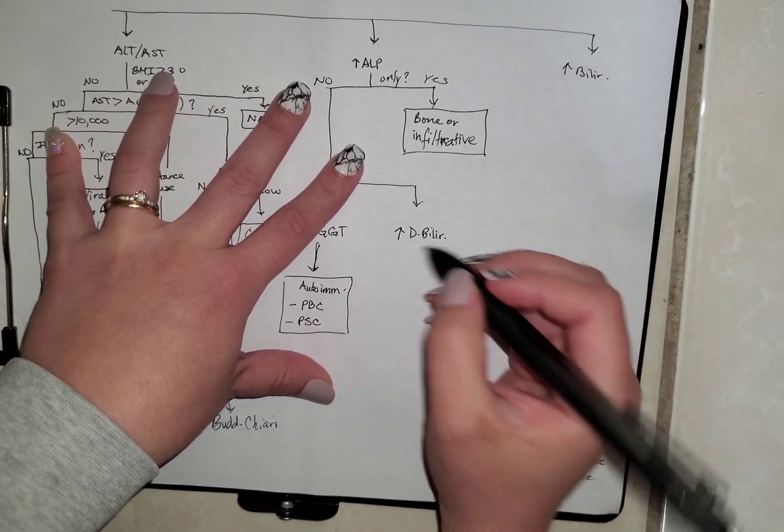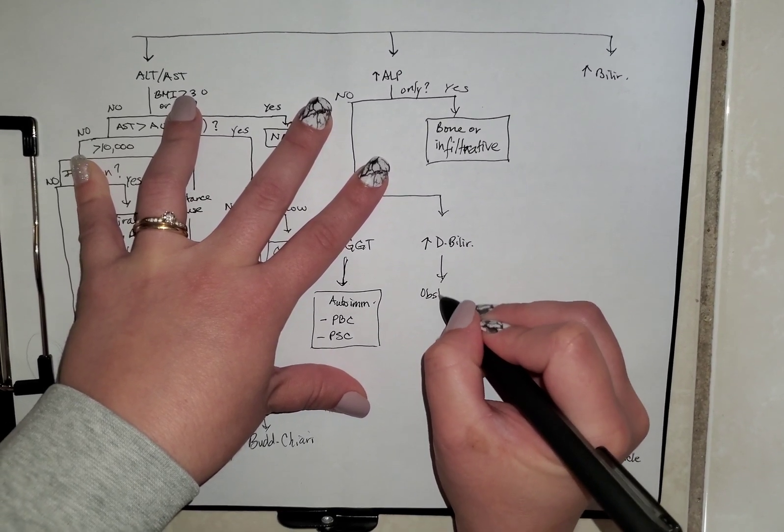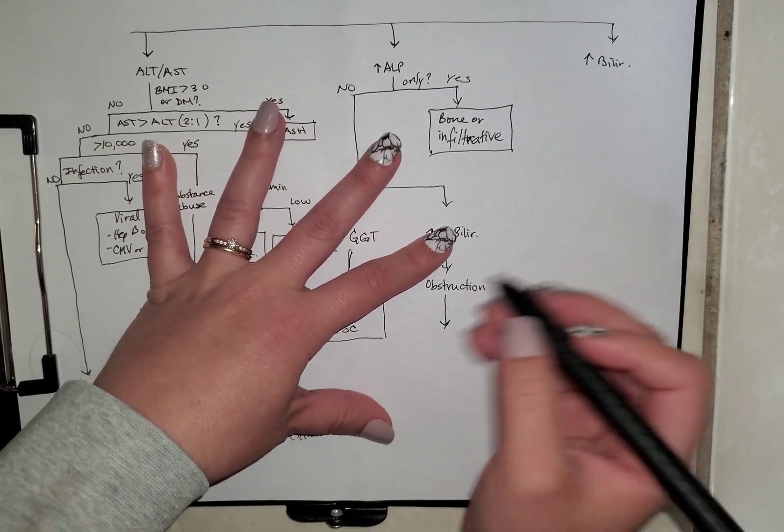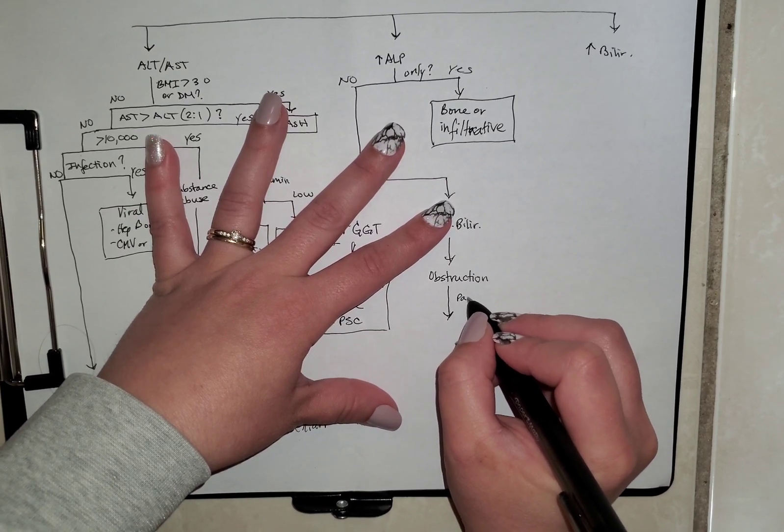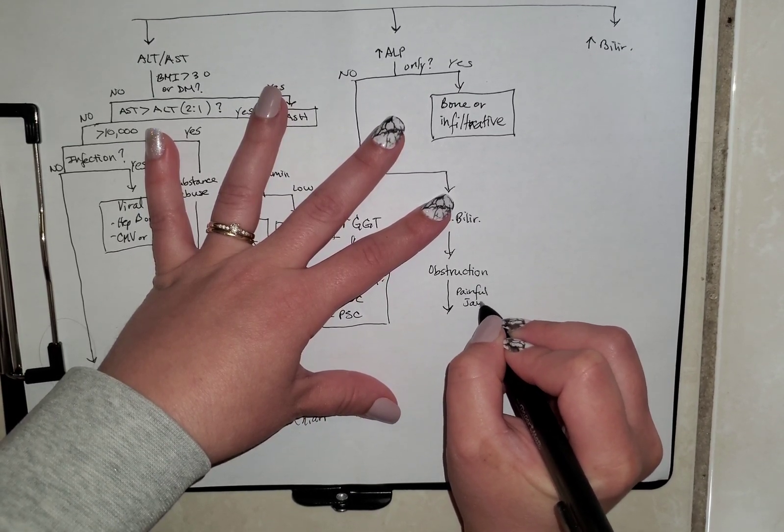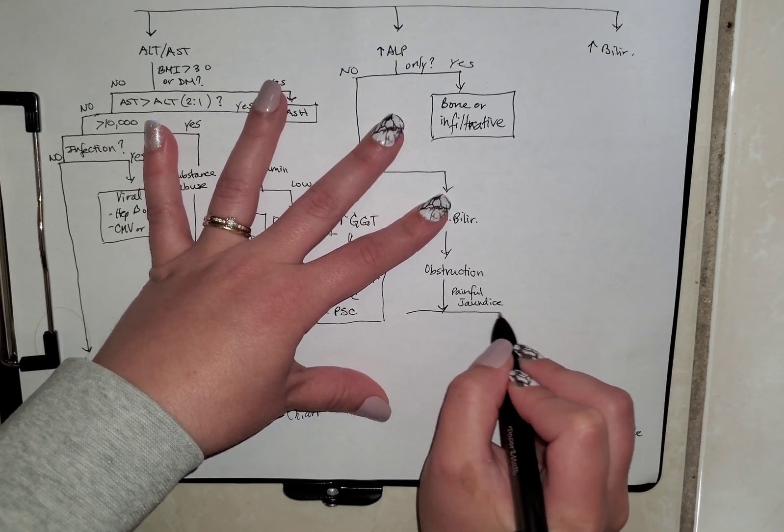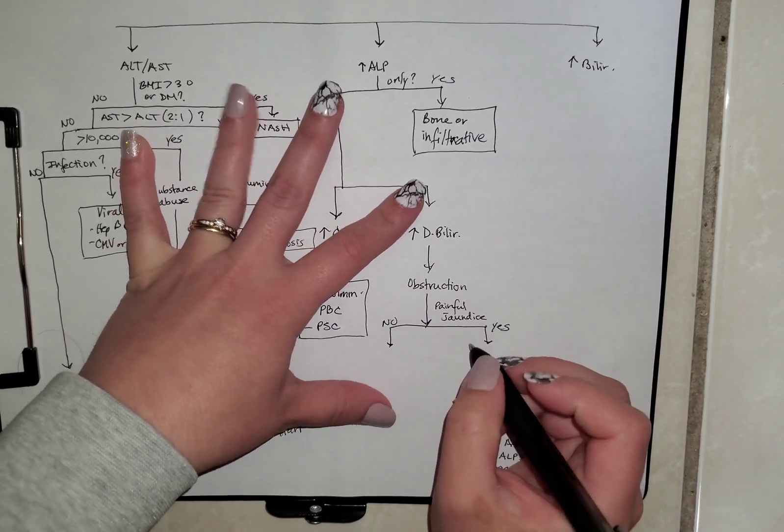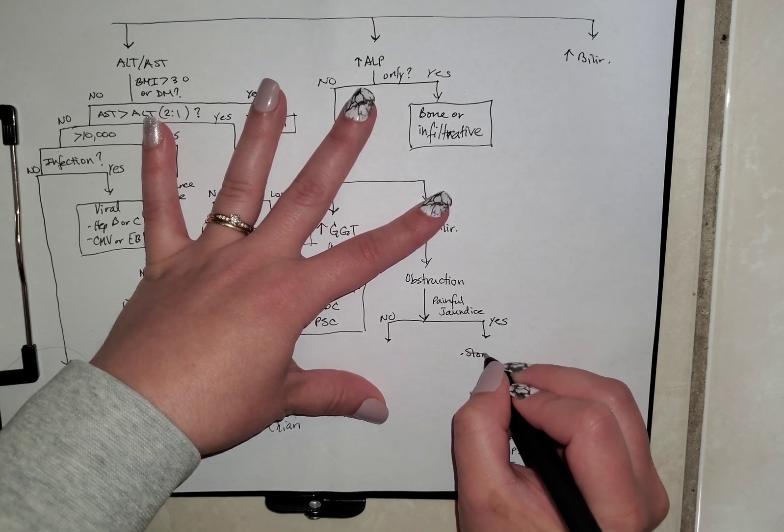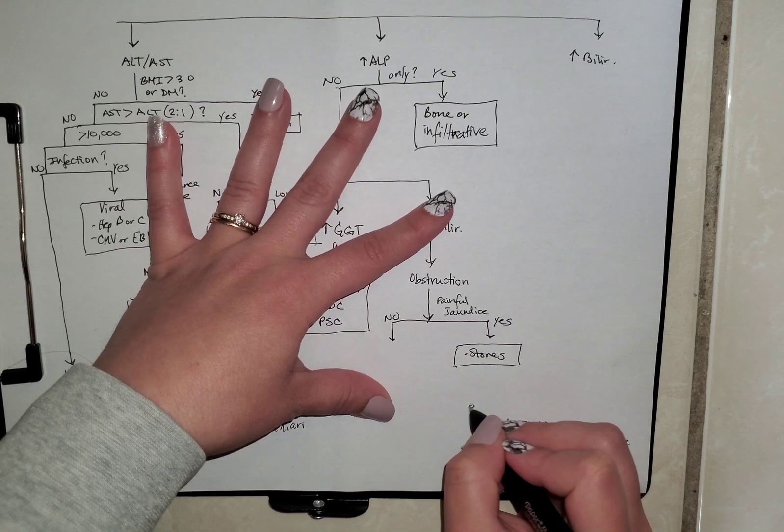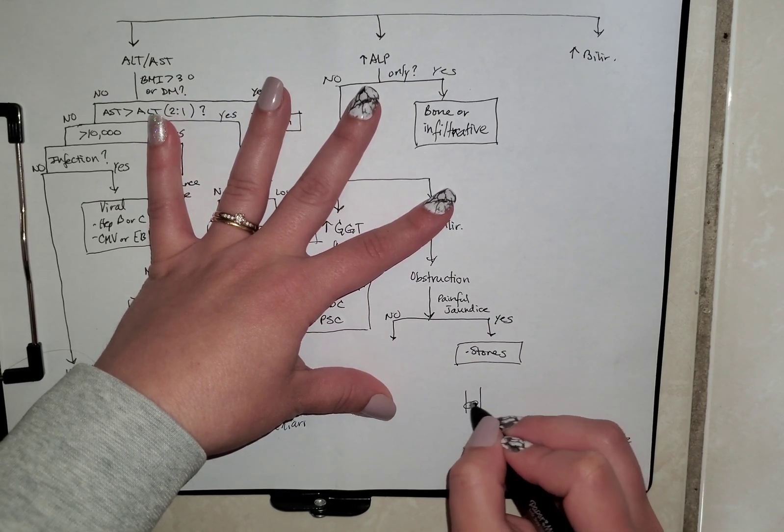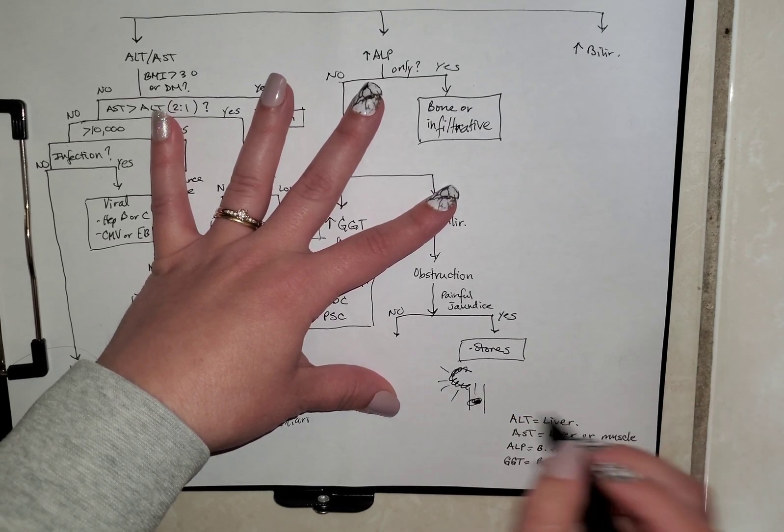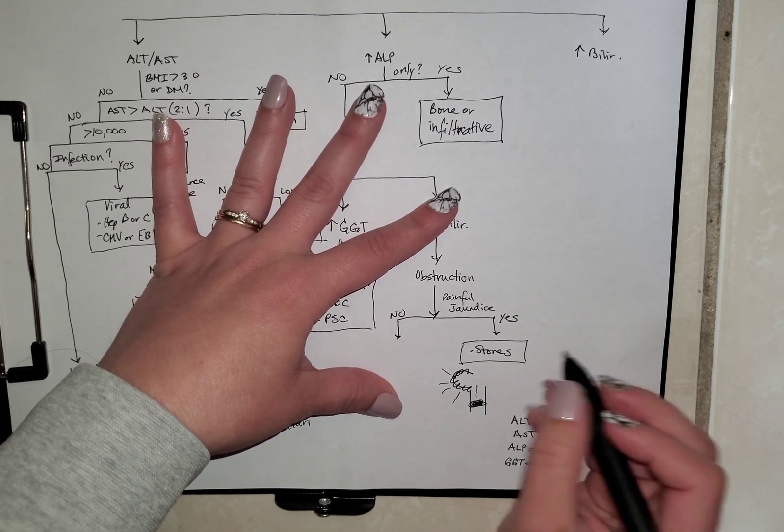For direct bilirubin, usually this will mean there's obstruction. Now, the question is, they're probably going to have jaundice, but the question is, is the jaundice painful? So painful jaundice. Well, if the answer is yes, then we're going to be having stones. Stones are painful. Why? Because they block the common duct, and they completely back up into the gallbladder. And the gallbladder is going to get very inflamed, and it's going to start hurting. And if nothing's going through, you're going to have stasis, and stasis leads to infection.